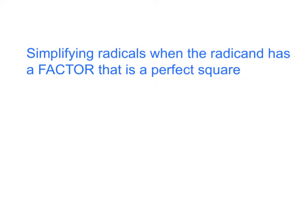This is an extra help video for simplifying radicals when the radicand has a factor that is a perfect square. We need to remember that the radical is this symbol, and the radicand is the number or variables inside. So we're talking about when the number or variables in our square root symbol has a factor that is a perfect square.